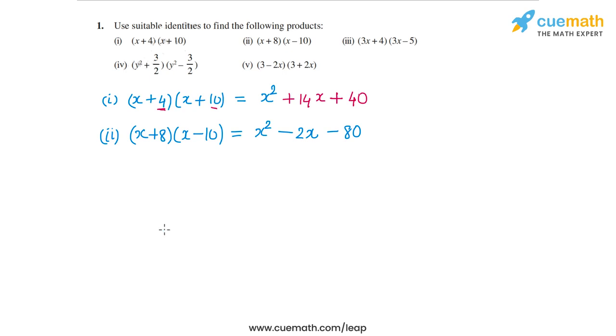And just so that you're clear, I'm using the identity (x+a)(x+b) is equal to x² + (a+b)x + ab. This is what I'm using for the first two parts.